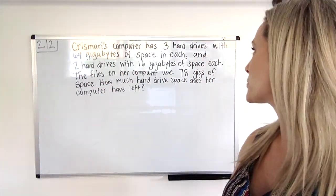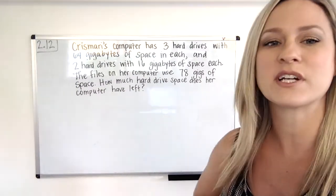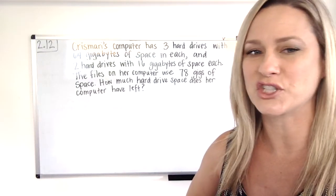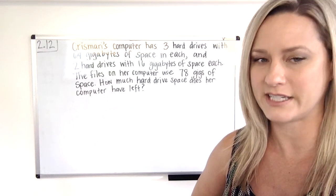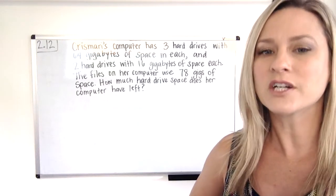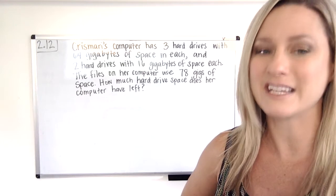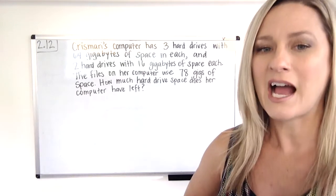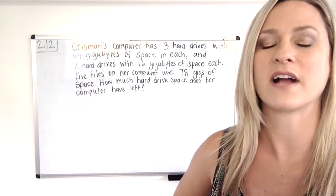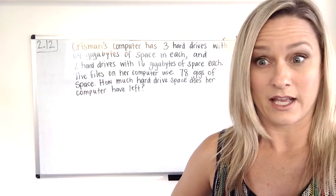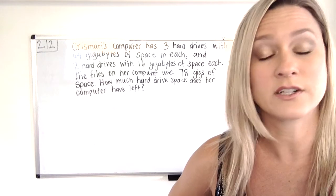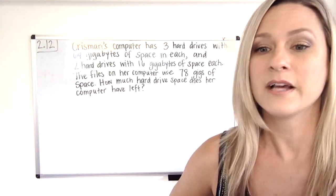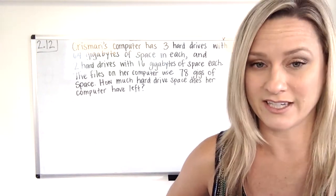Chris Mari's computer has three hard drives with 64 gigabytes of space in each, and two hard drives with 16 gigabytes of space each. The files on her computer use 78 gigs of space. How much hard drive space does her computer have left? Okay, you probably need to hit pause and read that again, or go in your Go Math book and read that again, because that was a lot of information.